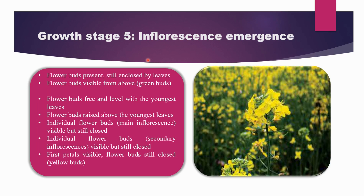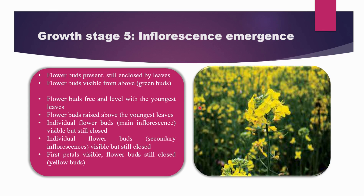Coming to the next growth stage, that is the inflorescence emergence. Here you can see that the flower buds are present but still enclosed by the leaves. The flowers are not completely open. The flower buds are visible from above as green buds. The flower buds raised above the youngest leaves, and the individual flower buds of the main inflorescence are visible. The secondary inflorescence is also visible but still enclosed. The first petals become visible but the flower buds are still closed, and yellow buds begin emerging in this inflorescence stage.